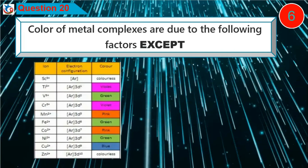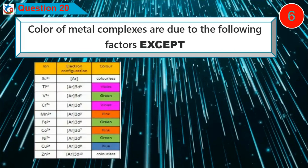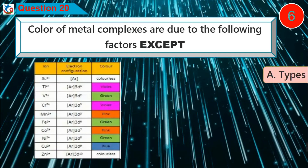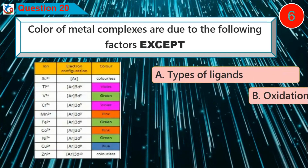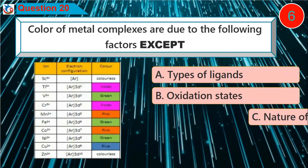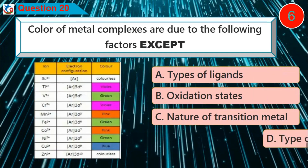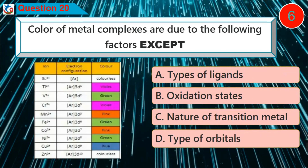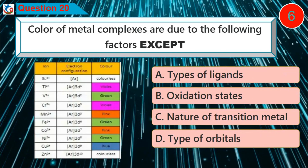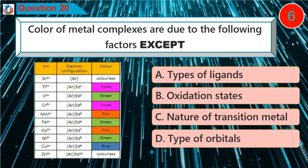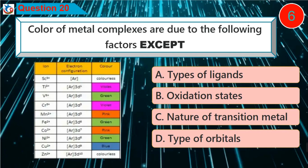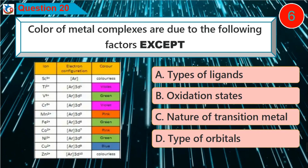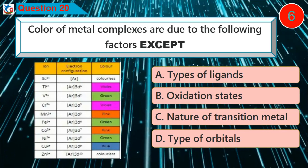Question 20: Colors of metal complexes are due to the following factors except — A. Types of ligands, B. Oxidation states, C. Nature of transition metal, D. Type of orbitals.